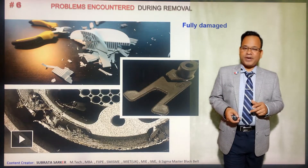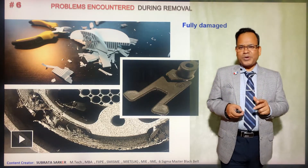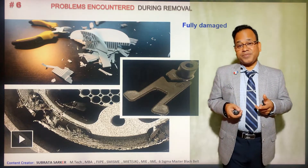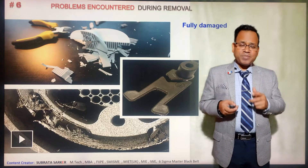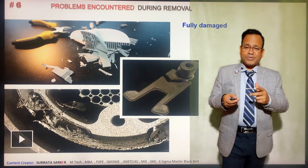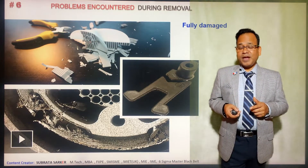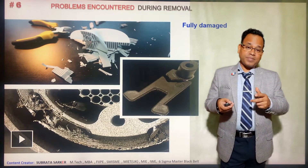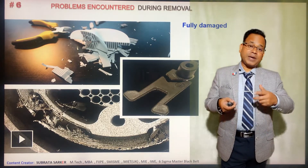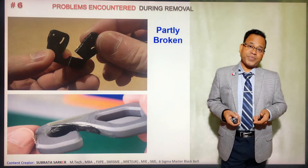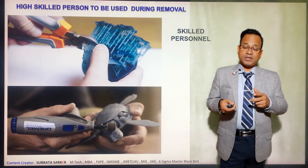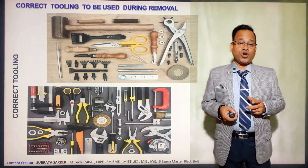After the component is built correctly, removal of the component is also challenging in 3D printing. Though it is an advanced manufacturing process, removal is still done manually, which is a very skillful job requiring special tooling. Otherwise, an otherwise acceptable component may be rejected, partly damaged, or fully damaged. Removal of supports also requires very skillful hands and special tools.